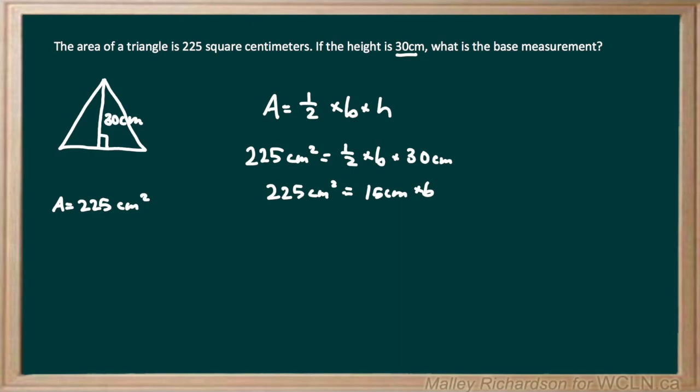Now to get rid of this multiplication between the base and the 15 centimeters, we're gonna divide both sides by 15 centimeters. This 15 centimeters and this 15 centimeters cancel out, and the units of this centimeter and this square cancel out.